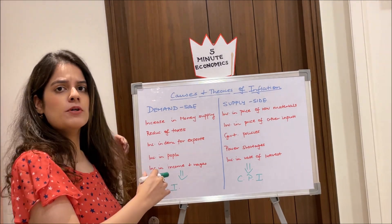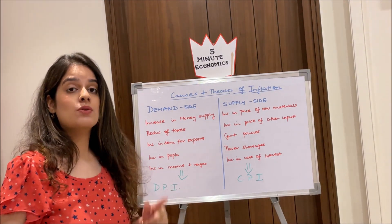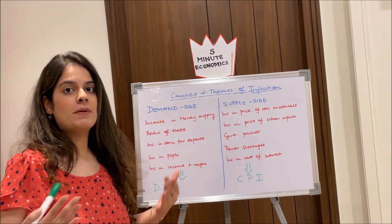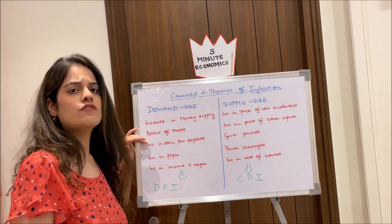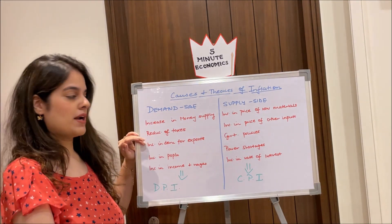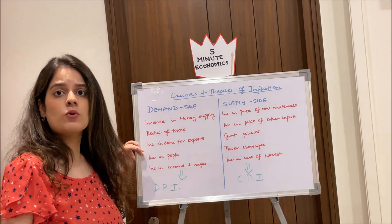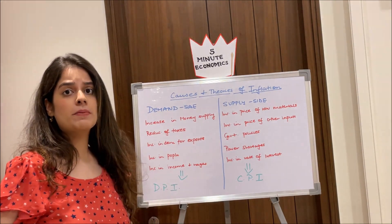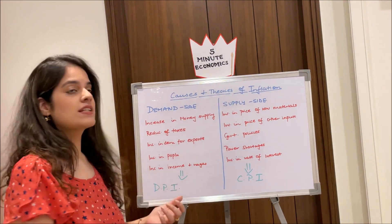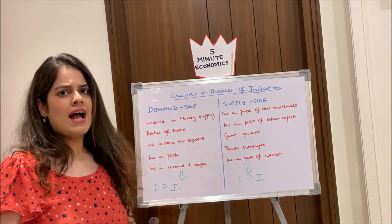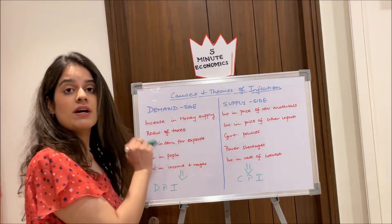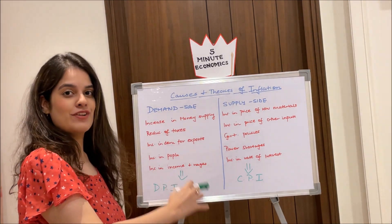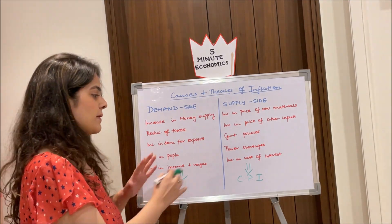Demand-side factors explain why inflation occurs due to an increase in demand. These include: increase in money supply — more money in the economy means more purchasing power; reduction of taxes — real income rises so people can demand more; increase in demand for exports — overall demand rises; increase in population — more people means more demand; and increase in income and wages — earning more leads to demanding more, pushing up prices. These demand-side factors lead to demand-pull inflation, or DPI.